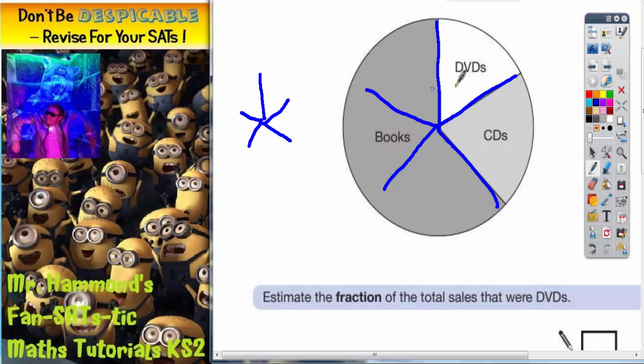So because my star is splitting it into five equal pieces, DVDs must be about one-fifth. And it does say estimate the fraction. So it may not be exactly a fifth, but it's the best estimate that I've got so far.